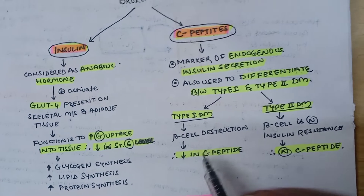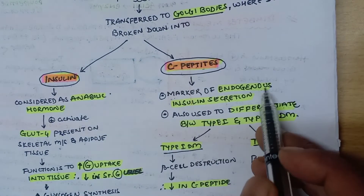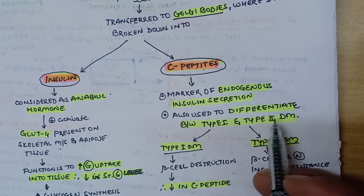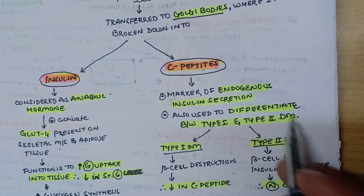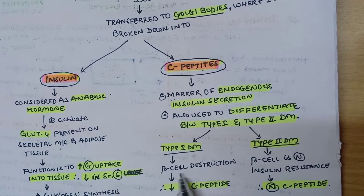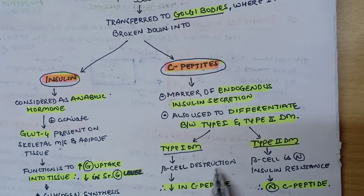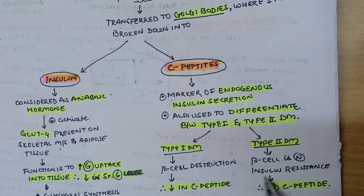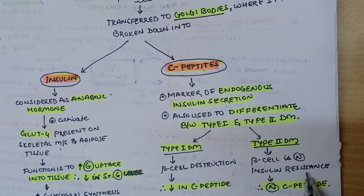C peptides are markers of endogenous insulin secretion and are used to differentiate between type 1 and type 2 diabetes mellitus. In type 1 diabetes, there is destruction of beta cells, therefore C peptide levels will be decreased. In type 2 diabetes mellitus, beta cells are normal but the main pathology is insulin resistance, so C peptide levels will be normal.